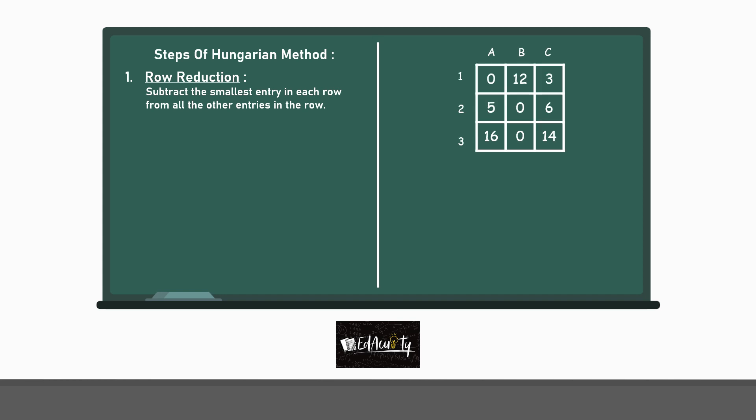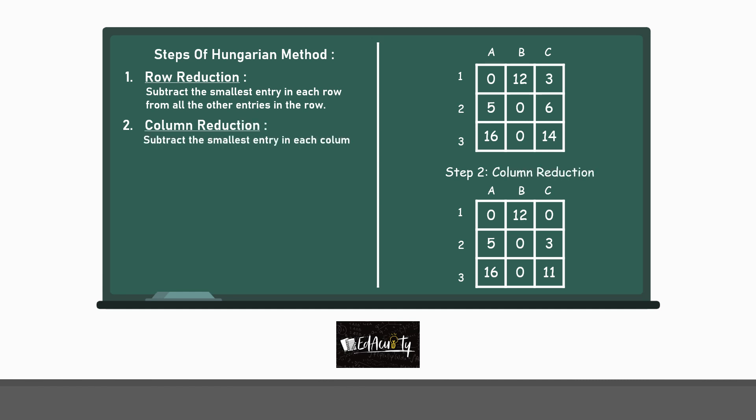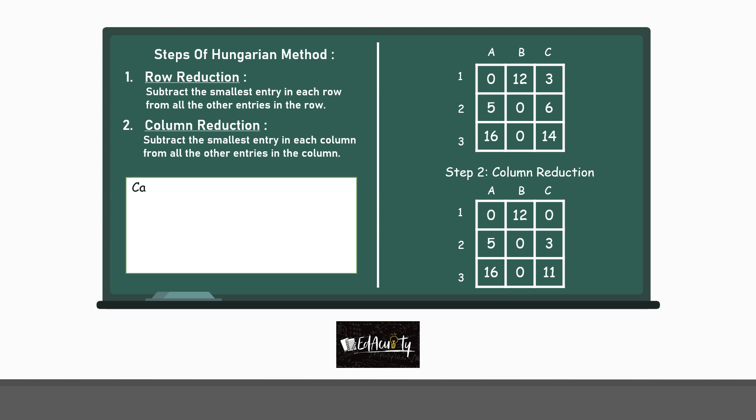This is the last matrix that we obtained. So, the next step is column reduction which states that subtract the smallest entry in each column from all the other entries in the column. So, this will again make the smallest entry in every column to be equal to 0. You can check for yourself. One question for you all. Can you think over why we are opting for row reduction or even column reduction? What can be the basic logic behind it? Want to know the answer? Stay tuned as we'll soon discuss the reason.